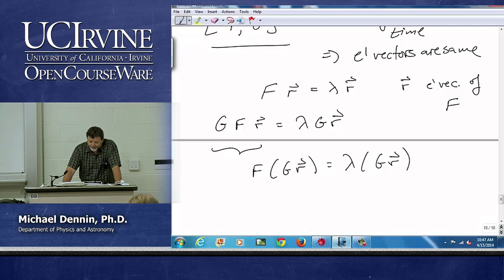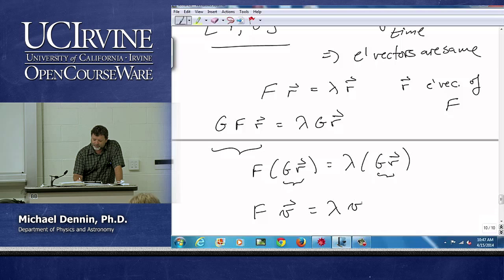Now what this means, right, g r is just some vector. I have f times some vector equals lambda times some vector.